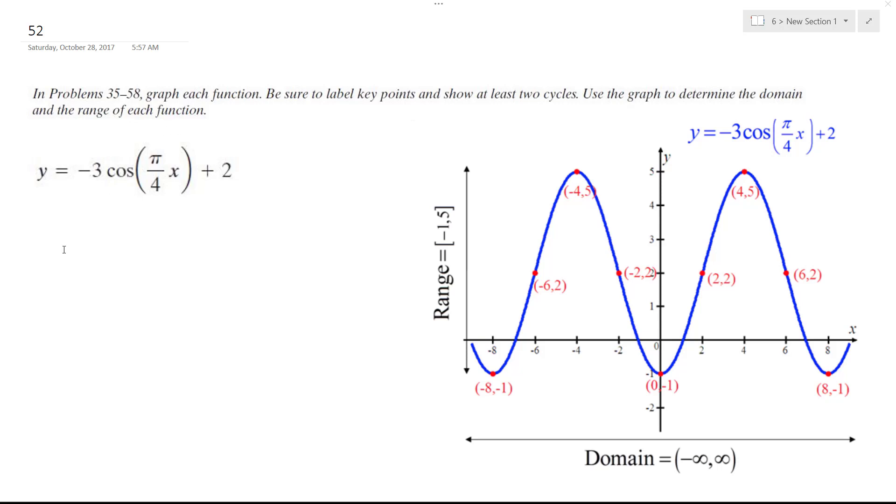Alright, so amplitude for this is the absolute value of this coefficient, which is just going to be 3. Period's going to be 2π divided by omega. Omega's π over 4, so this becomes π over 4.